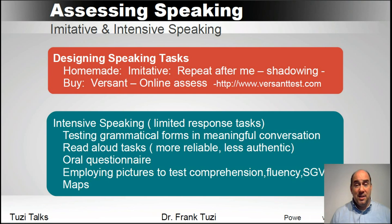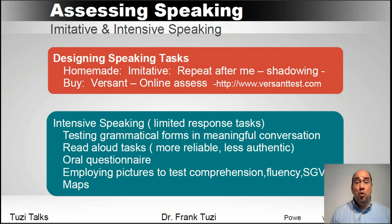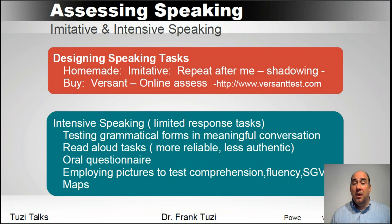We have imitative types of tests — repeat after me, or shadowing. You also have intensive speaking, where students have a limited response and only have to say a certain thing. For example, a minimal type of conversation where everything is fairly formulaic. You can test grammatical forms where you have a sentence and change one element, forcing other things to change: 'I am reading a book' — change 'I' to 'he' — 'He is reading a book' — change 'he' to 'they' — 'They are reading a book.' Students speak those things and also learn the grammatical forms that go with them.